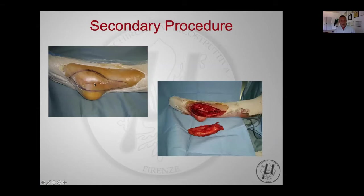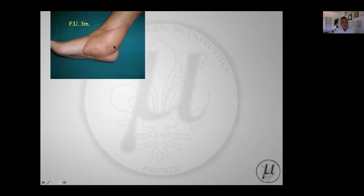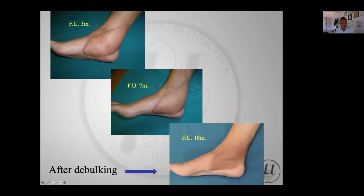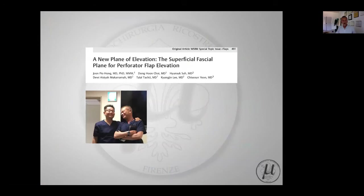Debulking can also be done as a secondary procedure. This is a sarcoma resection of the ankle - you see the ALT flap three months after surgery is quite bulky because the lymphatic outflow is not restored. There is natural improvement after seven months, but it is not perfect, so we performed debulking and you see the result after 18 months.